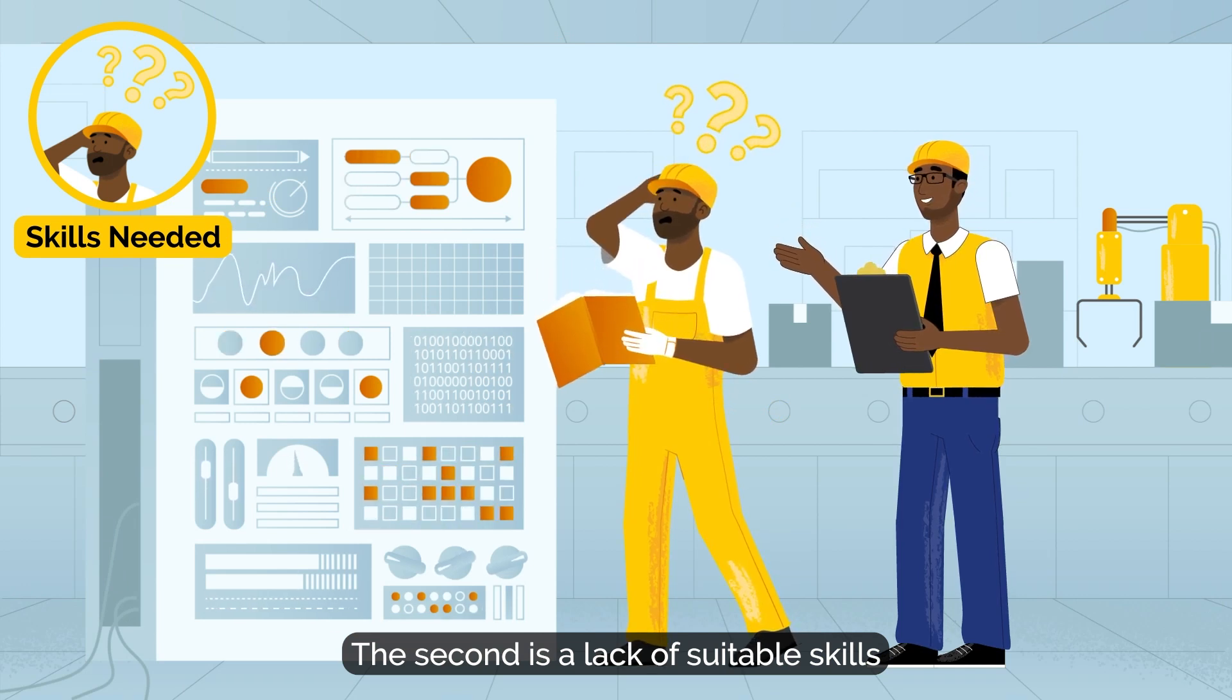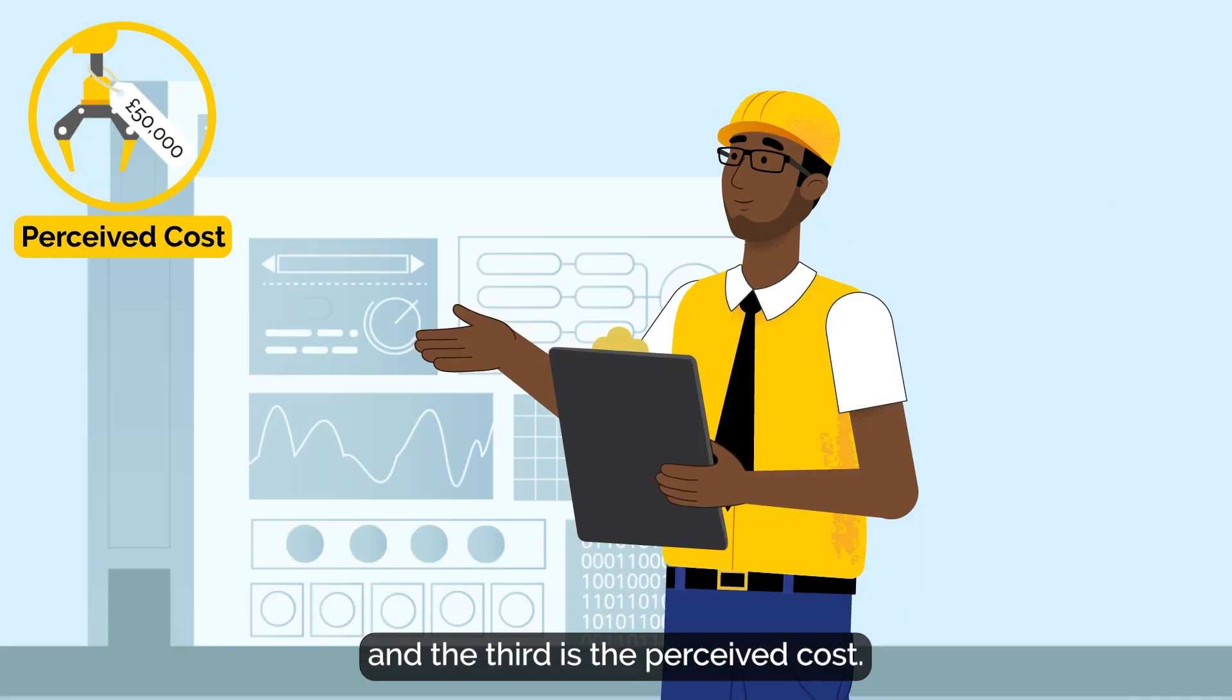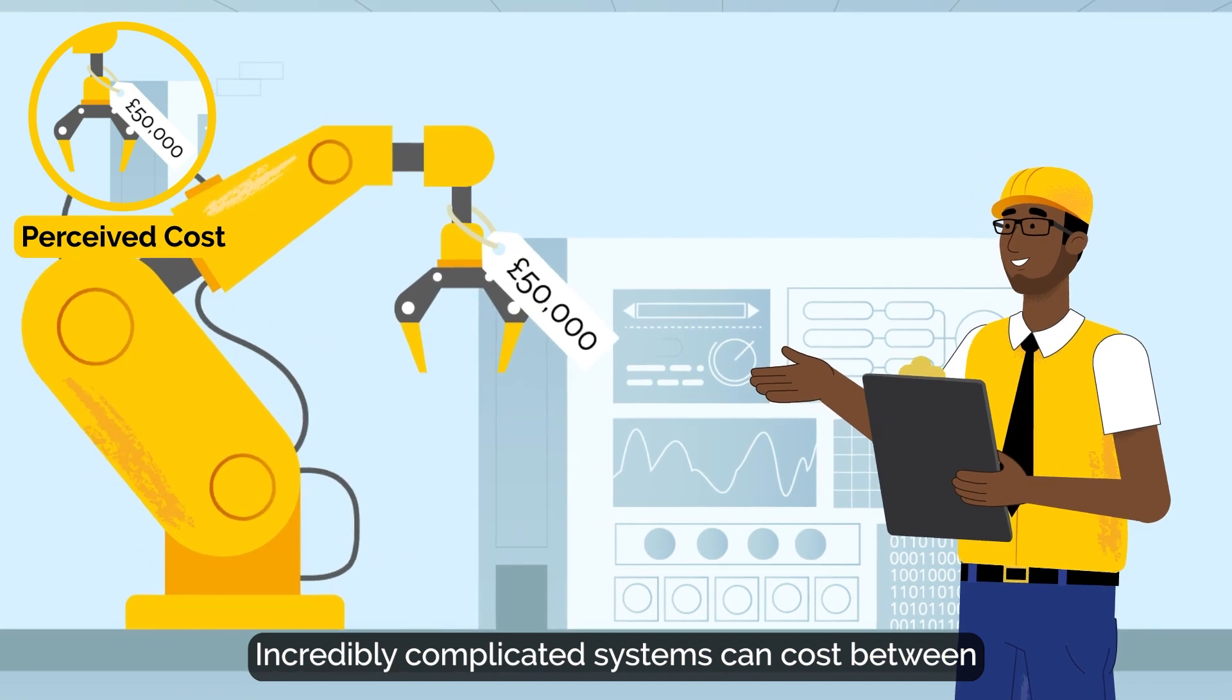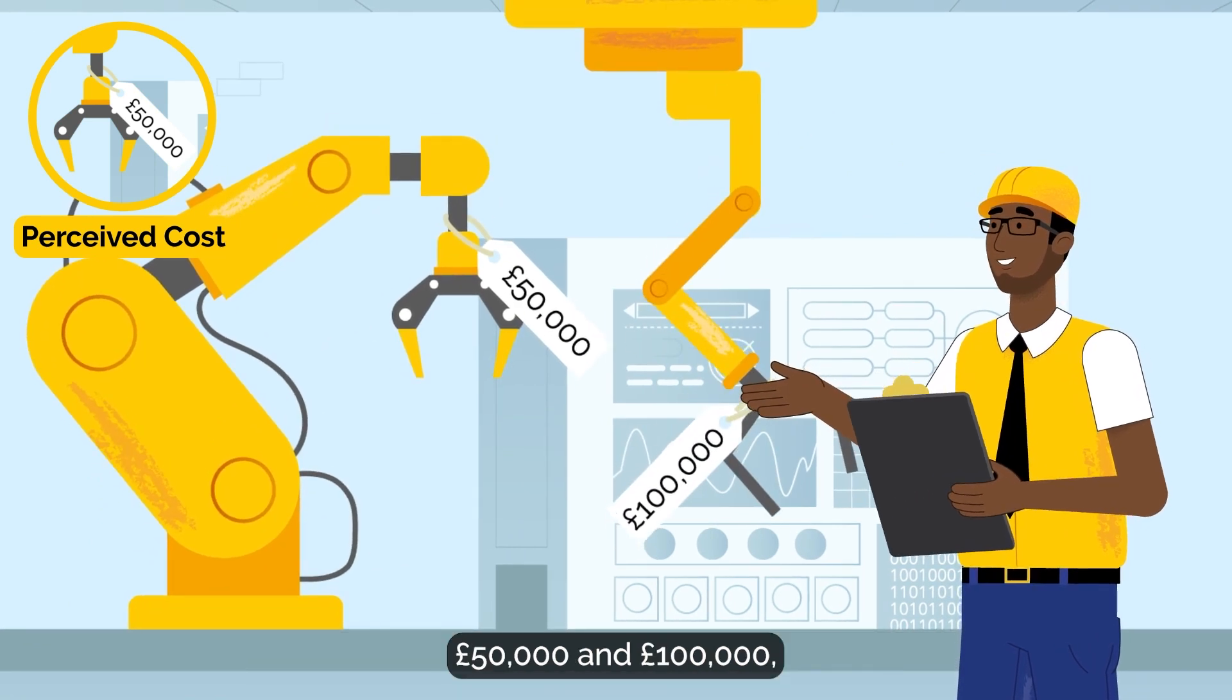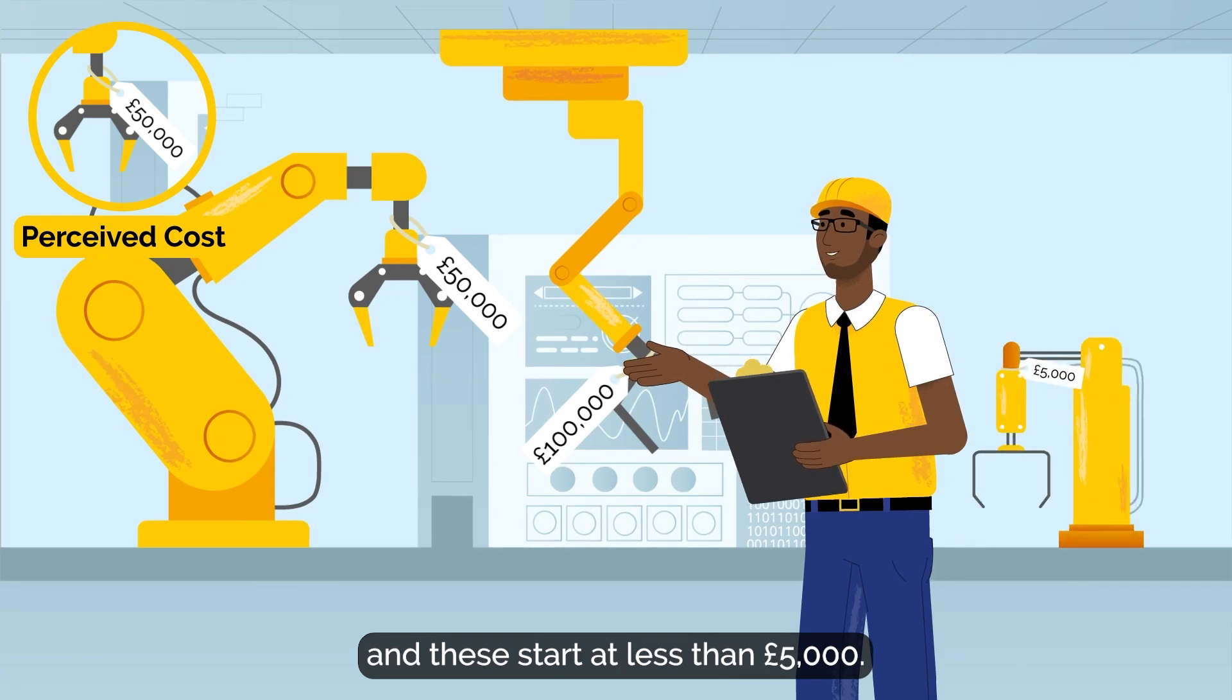The second is a lack of suitable skills to act on an automation project. And the third is the perceived cost. Incredibly complicated systems can cost between £50,000 and £100,000, but there are simpler solutions too, and these start at less than £5,000.